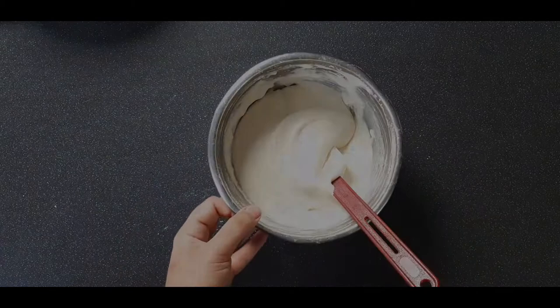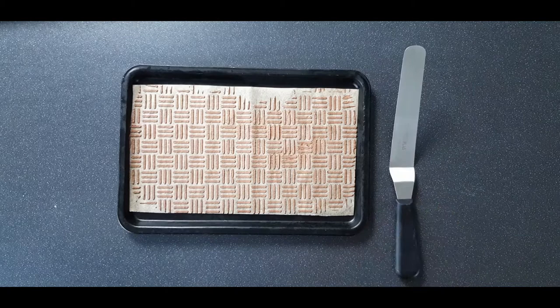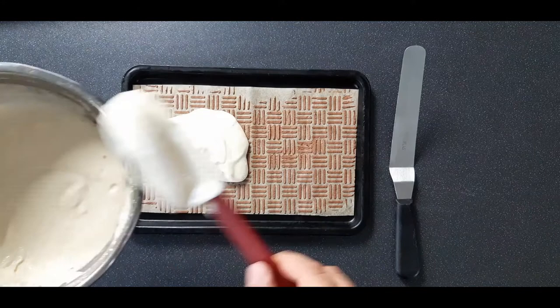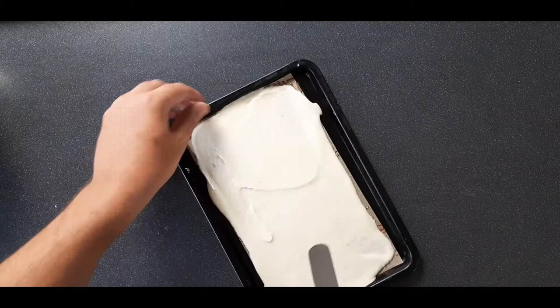That's the sponge element of the joconde done. You can grab your stencil paste out of the freezer now that it's frozen. You'll need a stepped palette knife for this, and then you're just going to gently spread over a small amount of your sponge mixture.